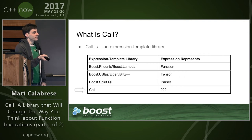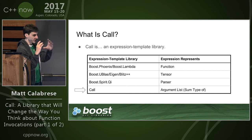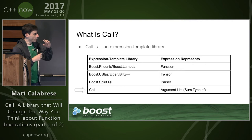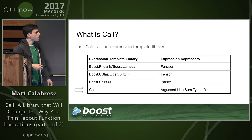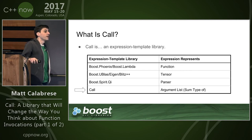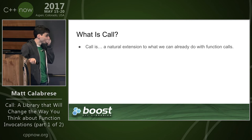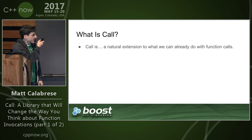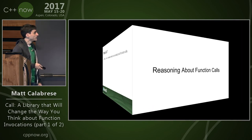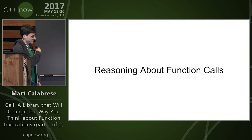All the expressions you form — those little 'prov' things like prov::access_tuple — represent some type of argument list. Finally, call is basically just a natural extension to what we already do with function calls.